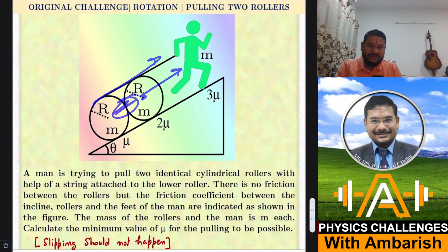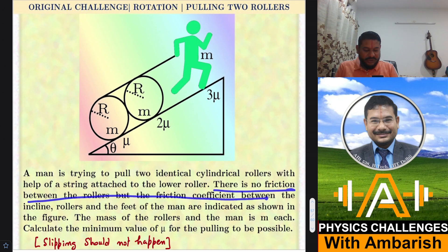When this roller moves up, this roller will also move up because of constraint. The friction coefficient between the inclined rollers and the feet of the man are indicated as shown. Here the coefficient of friction is μ, here it's 2μ, and here it's 3μ.